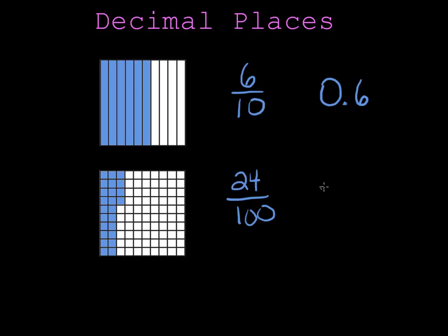Which I can write like this. There are no wholes shaded. And twenty-four hundredths is written like this. So my two is in the tenths place and my four is in the hundredths place. This decimal is read twenty-four hundredths.